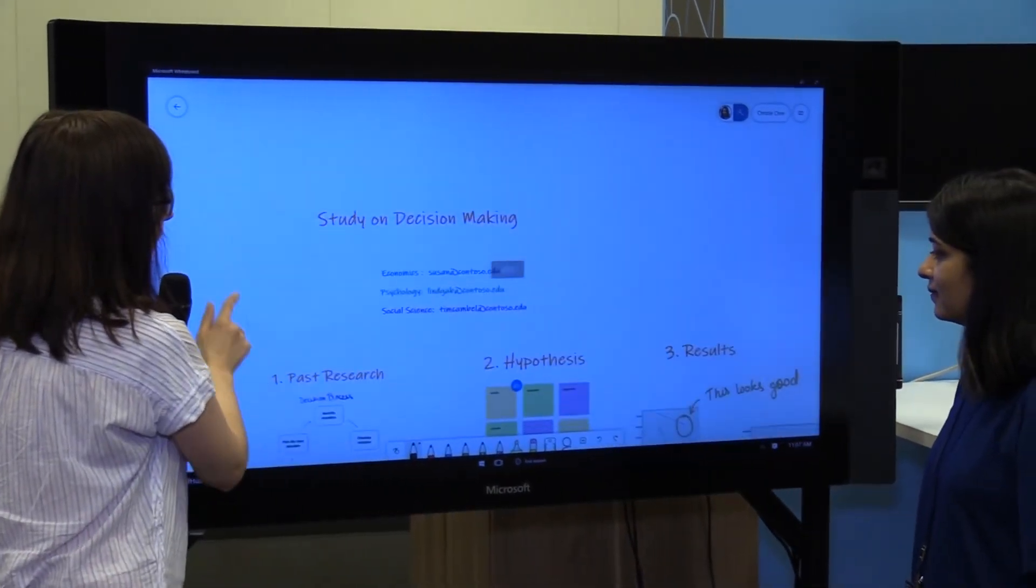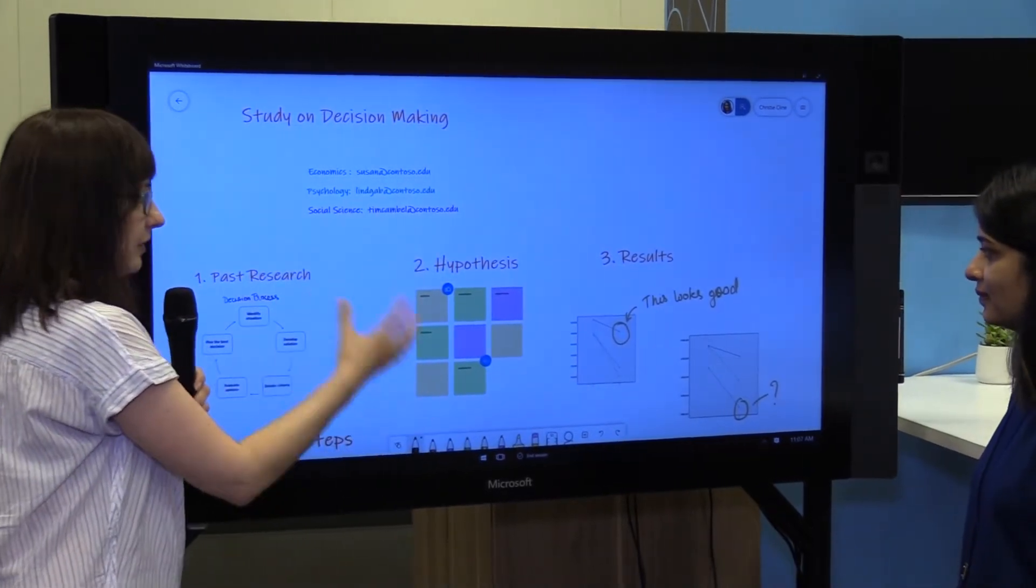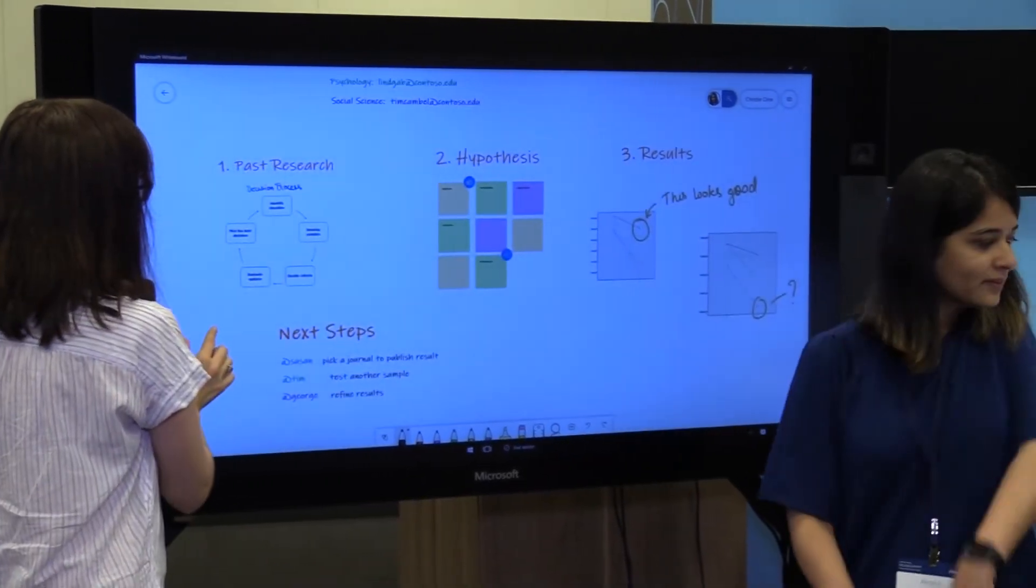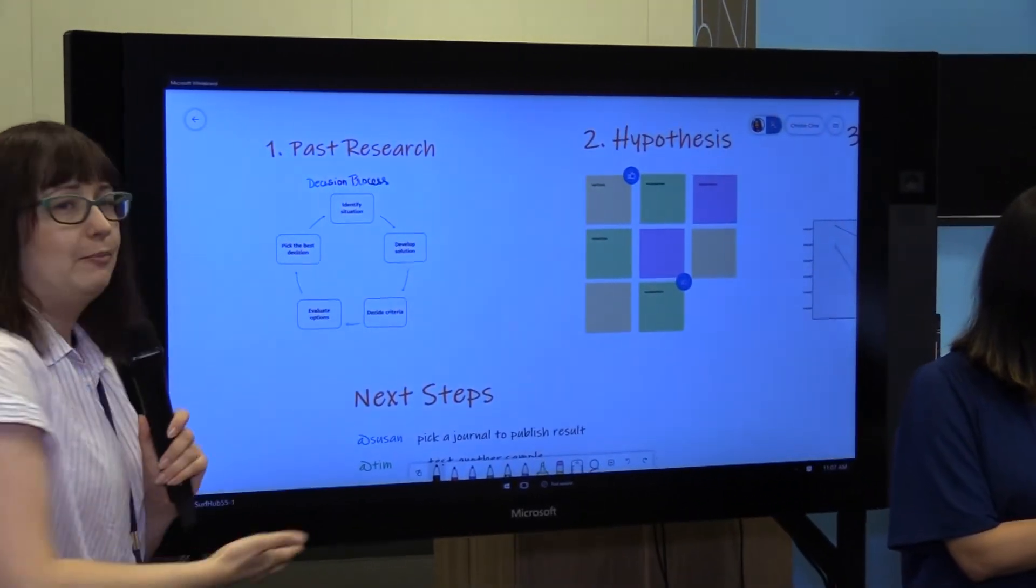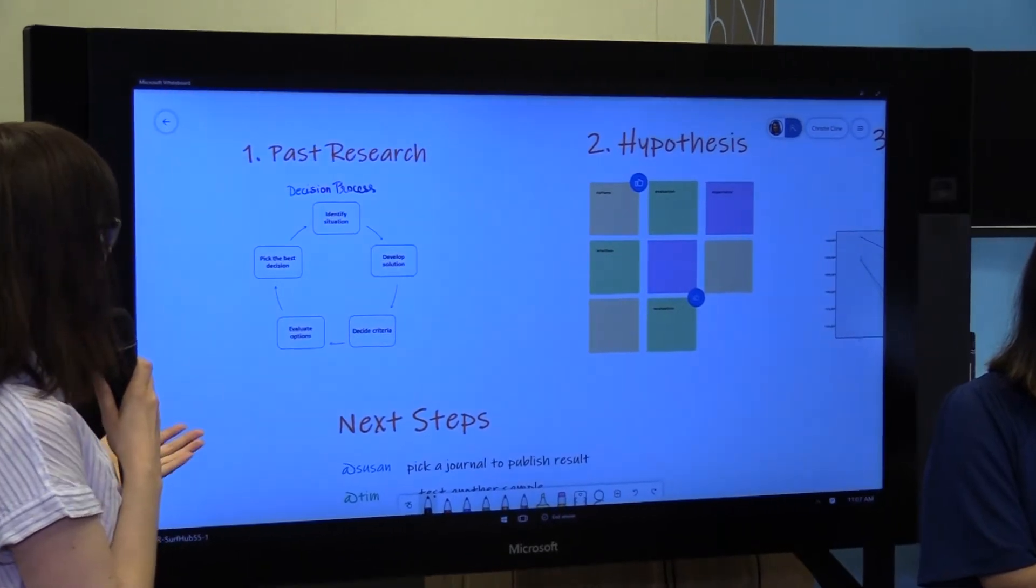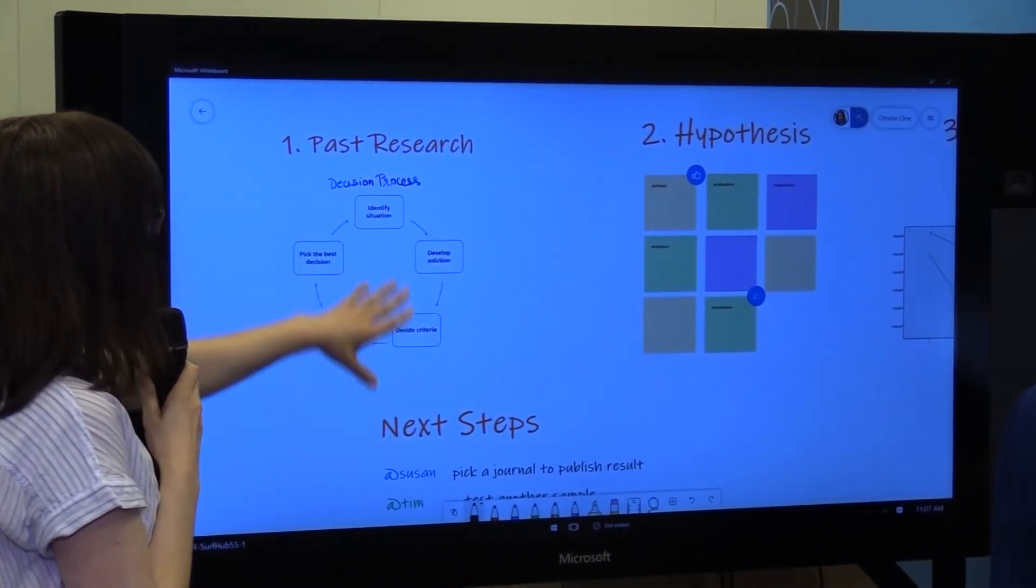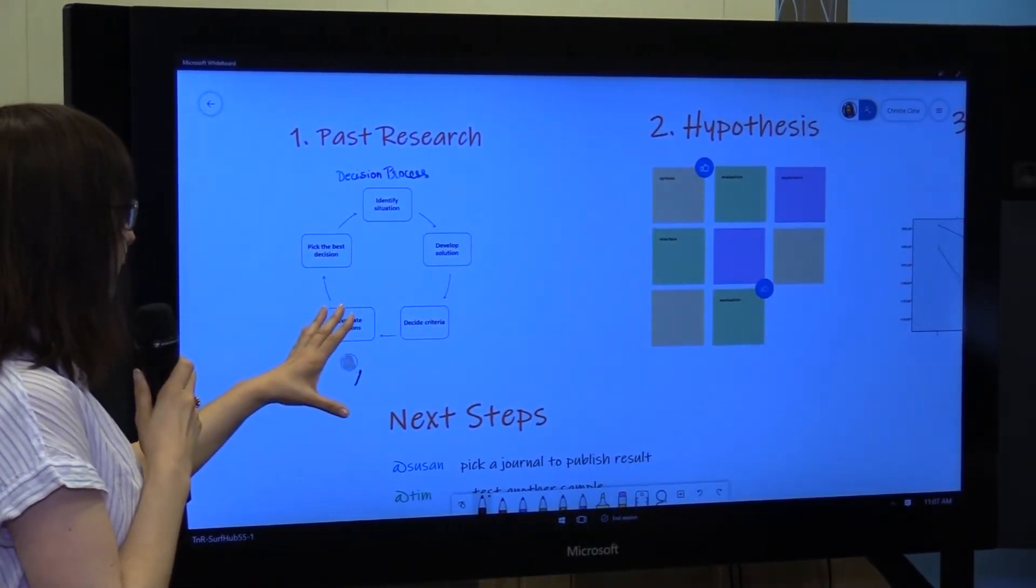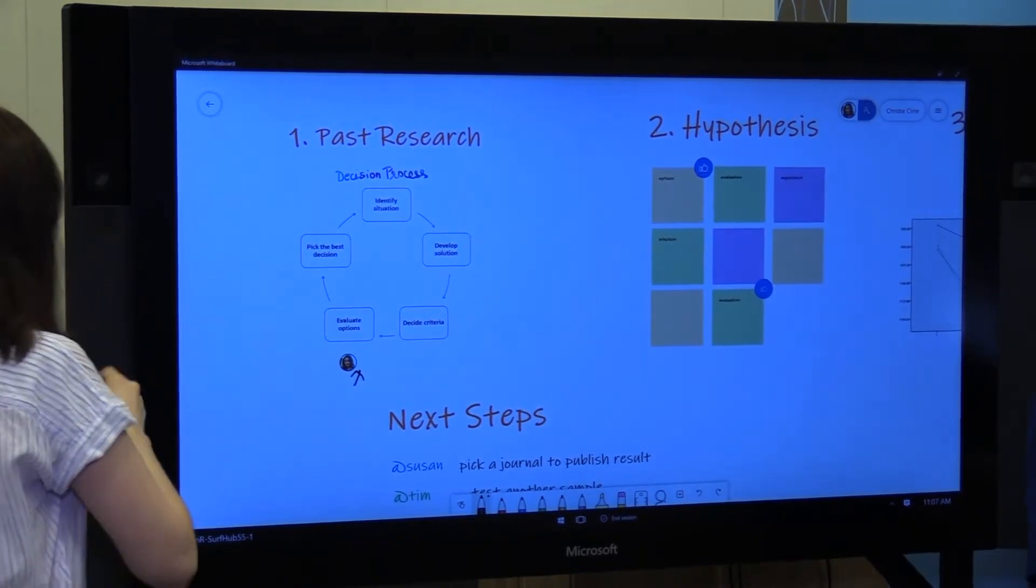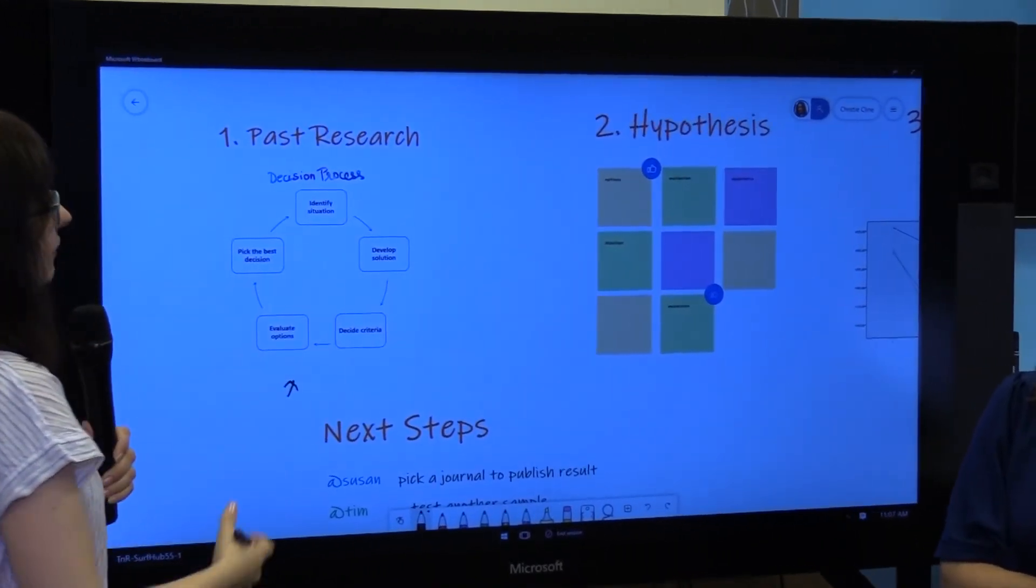What we've been doing is a study on decision making. We've talked a lot about the different aspects. As we've been going through this collaboratively, we're discussing, for example, the past research and validating the decision making process. As we've looked at this, we've realized this is actually not what we need this flow to be. But this is an artifact that's just like an image. You can see that Arpida has identified where we need to fix it.